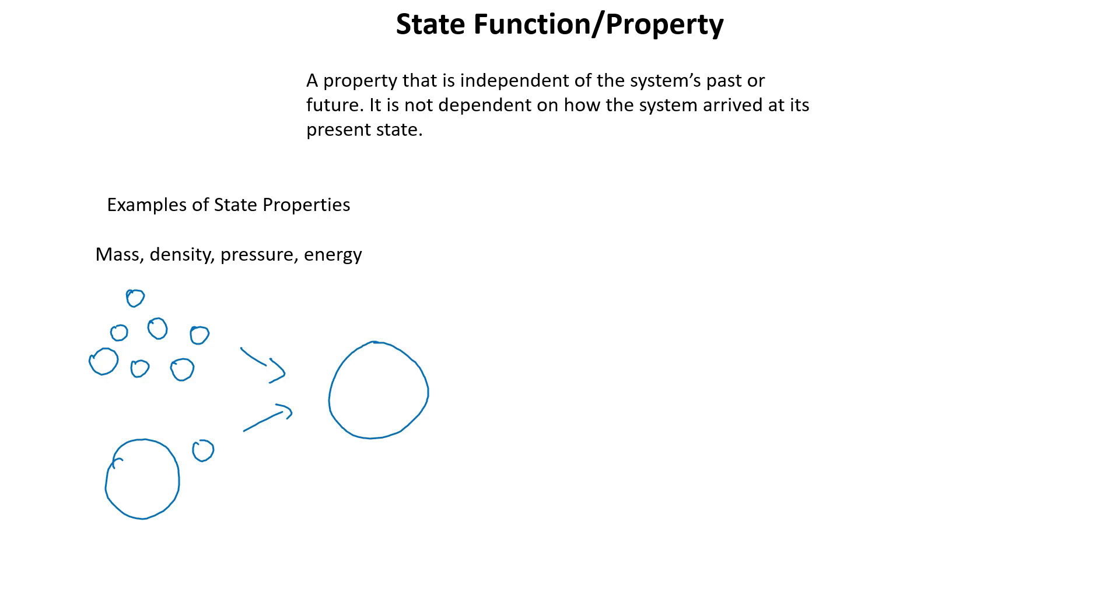So let's contrast these state properties with non-state properties. Some examples of non-state properties are work, distance, and heat. So measuring distance is something we're all probably pretty familiar with. Imagine if you have city A and city B.